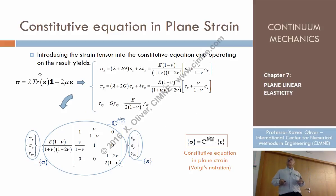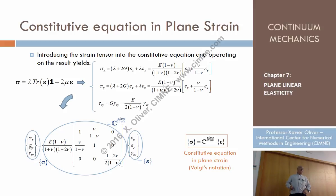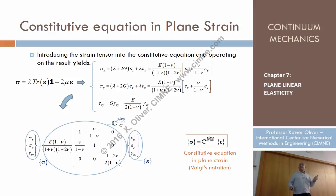By replacing these conditions in Hooke's law, we can finally obtain a relation involving sigma X, sigma Y, and tau XY — the stress vector in Voigt notation — related to the vector of significant strains, epsilon X, epsilon Y, and gamma XY. This relation is given by a 3×3 constitutive matrix, which is different from the one we had in plane stress. So we have a different matrix for plane strain and for plane stress, both relating the 3 in-plane stresses and the 3 in-plane strains.